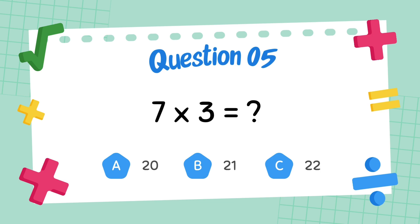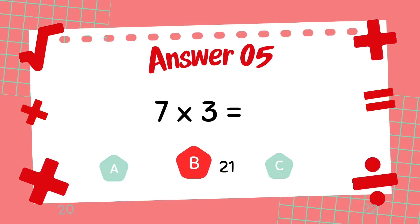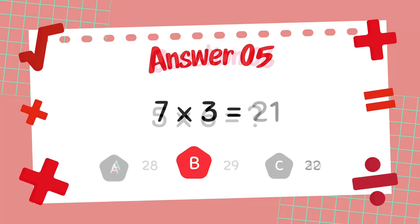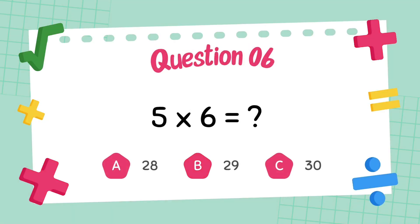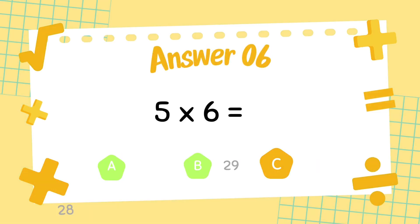What does 7 multiply 3? The answer is 21. What does 5 multiply 6? The answer is 30.